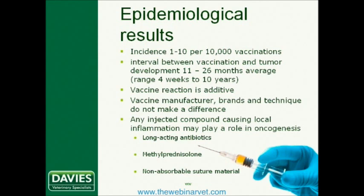The incidence of sarcoma development after vaccination is rare, and reports are somewhat variable due to relatively low numbers of cases. Reports suggest the incidence of feline injection site sarcoma is approximately one in 10,000 vaccinations, but may be as high as one in 1,000 vaccinations administered. The interval between vaccination and tumour development has been reported to be between four weeks and 10 years, although times on average seem to be around 11 to 26 months. The effect of multiple injections appears to be additive, and the likelihood of sarcoma development increases with the number of vaccines given simultaneously at the same site.